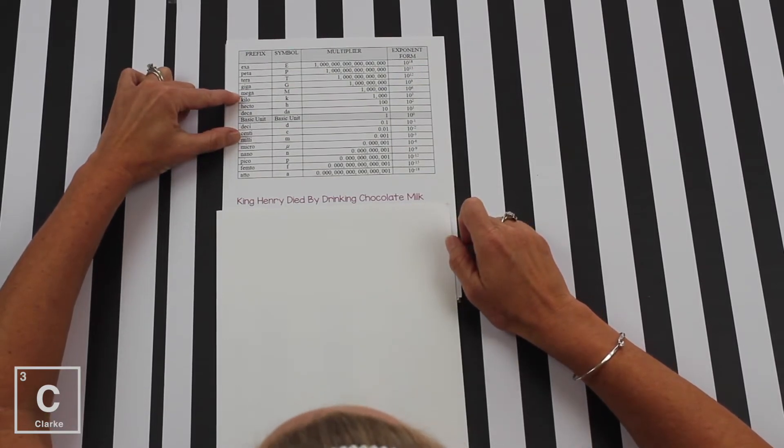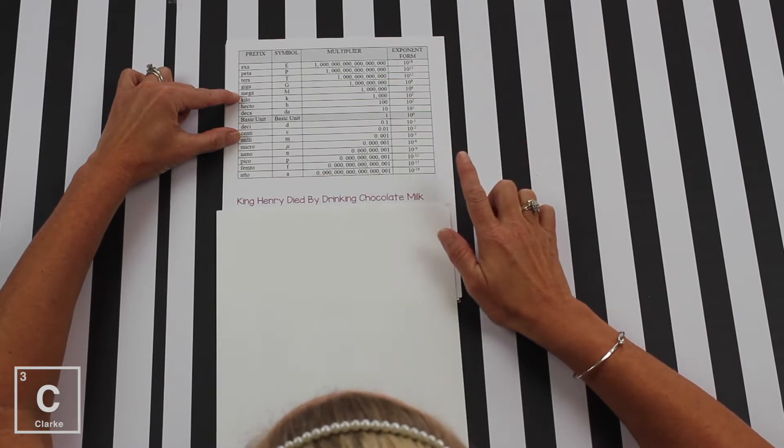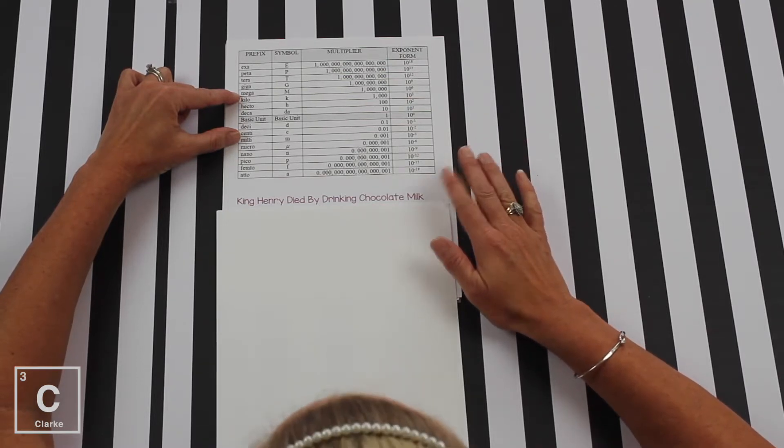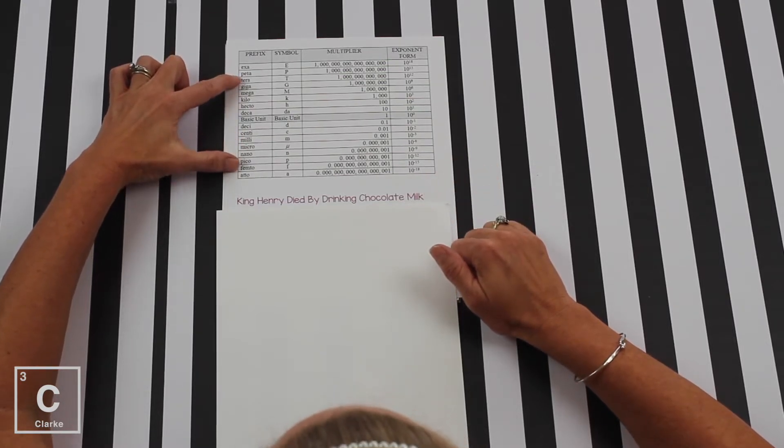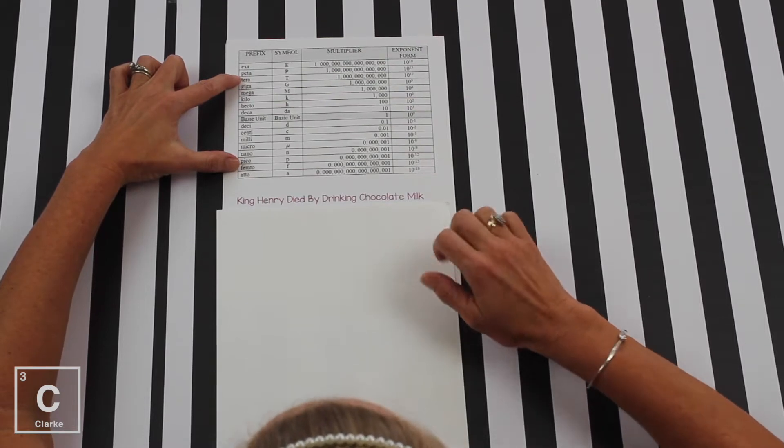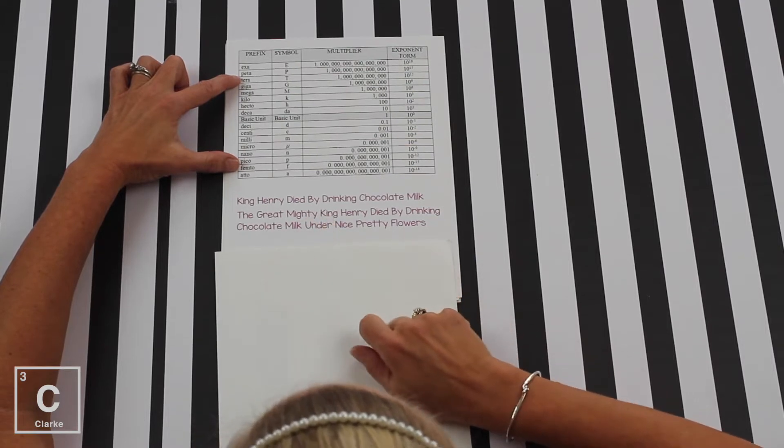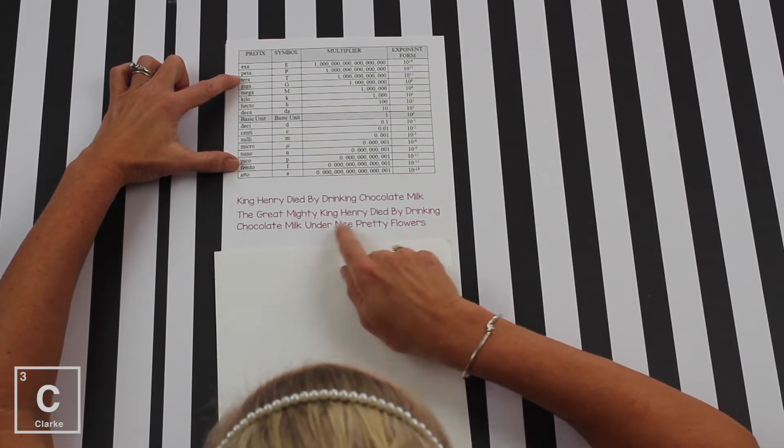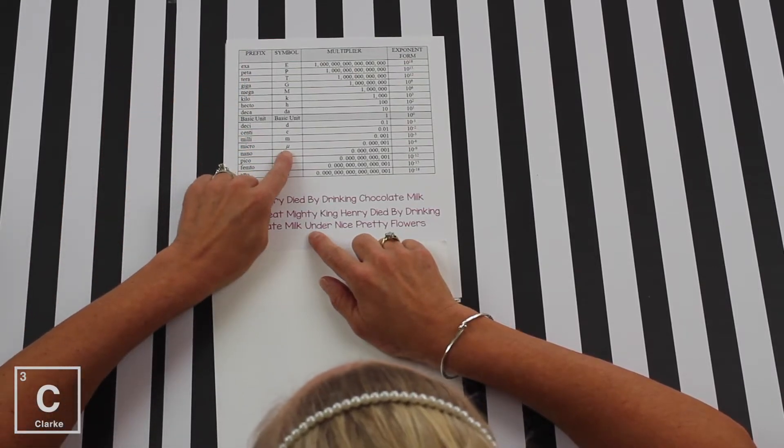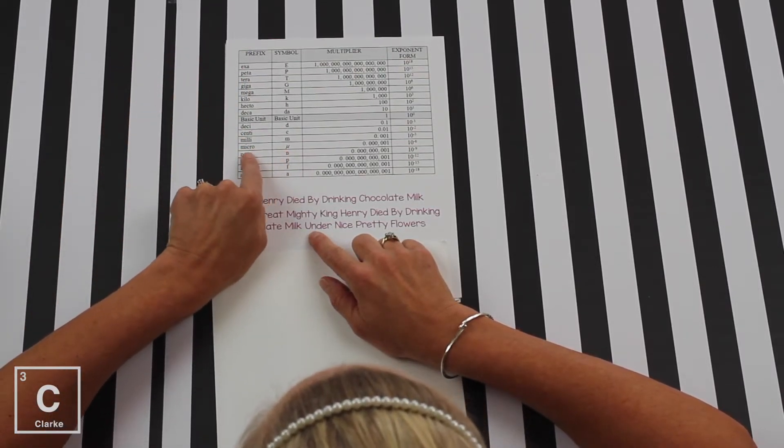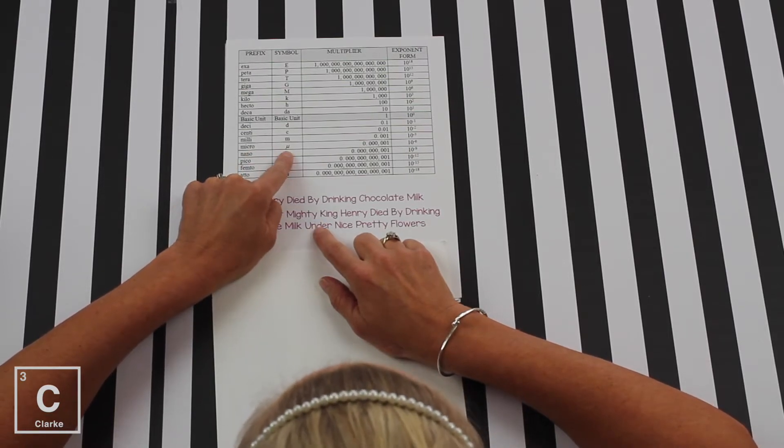Now, that's the one you were supposed to learn maybe in middle school or so. But now that we're in high school chemistry, we definitely need to expand that. And so, like I said, I teach from terra to femto. And so, I have a new mnemonic device. The great, mighty King Henry died by drinking chocolate milk under nice, pretty flowers. Now, let's talk about this under right quick. Under, that symbol is here, you. But it means micro. Micro's unit is this weird looking you. So that's where under comes from.